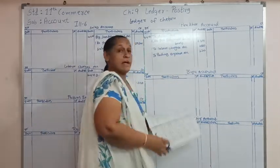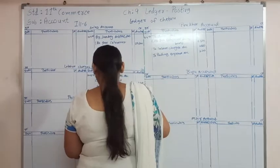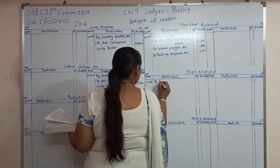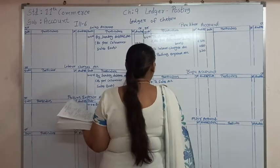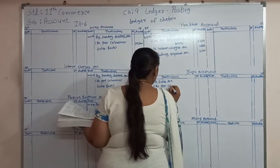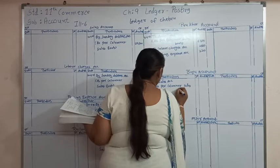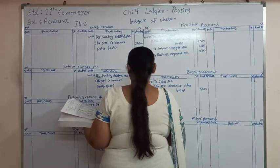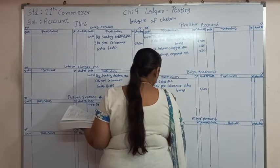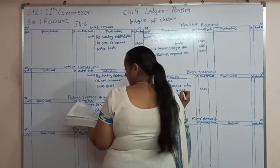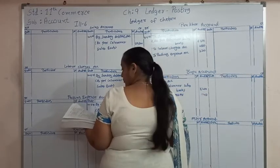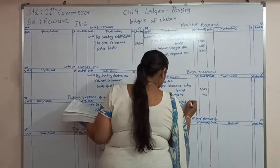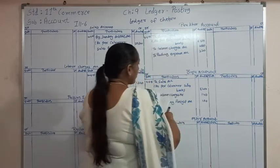Now let's see the same for the Birju account. On the debit side of Birju account we write: on date 9/6/15, to sales account as per columnar sales book. Total of the sales will be 5,400. Then we will write to labour charges account — 140. Then to railway freight account — 100. This is for the Birju account.